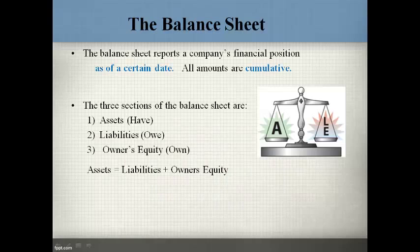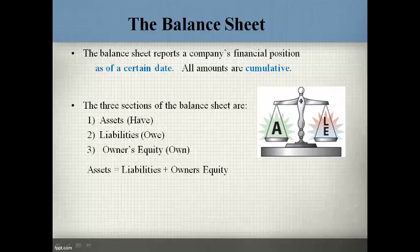The balance sheet reports a company's financial position as of a certain date. All amounts on the balance sheet are cumulative, meaning that the amount the company started with is adjusted for all additions and decreases since the business began to get to a cumulative amount. The items on the balance sheet are assets, liabilities, and owner's equity. We will discuss these in more detail in a few moments.